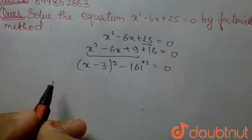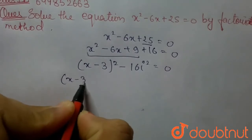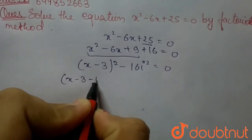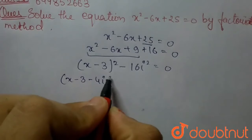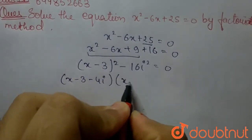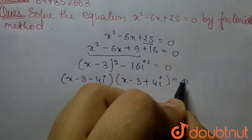A² - B² is (A + B)(A - B). So we can write it as (x - 3 - 4i)(x - 3 + 4i) = 0.